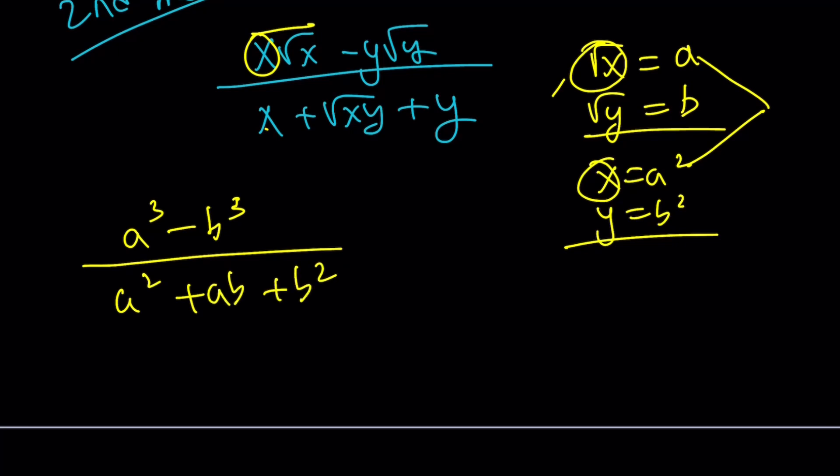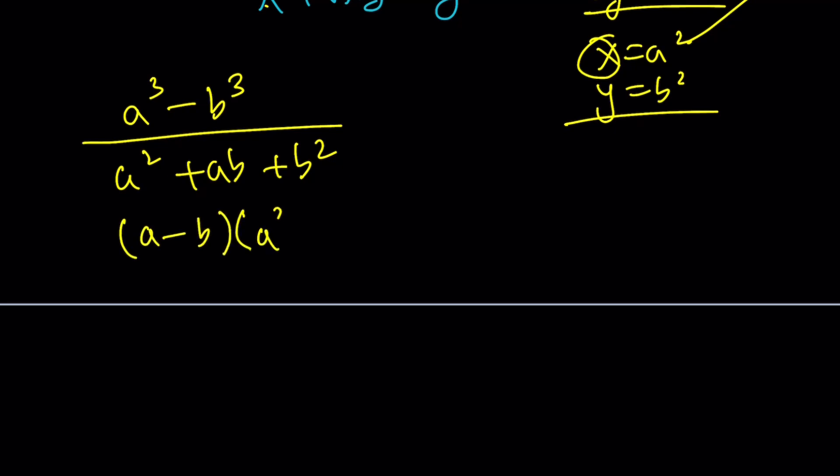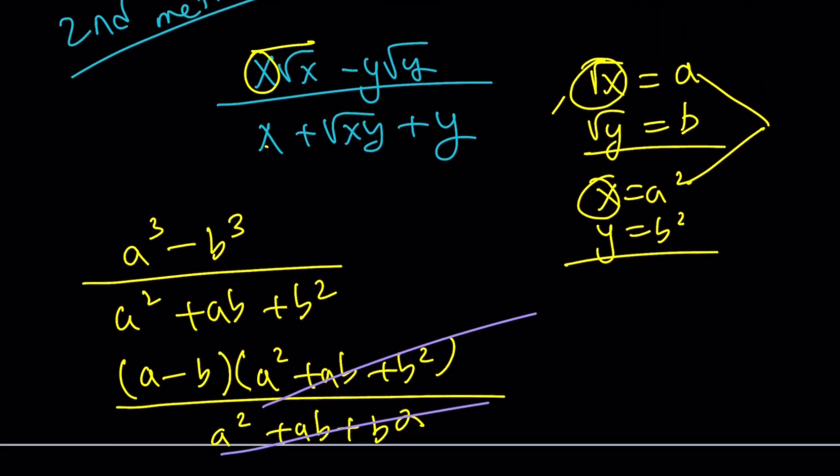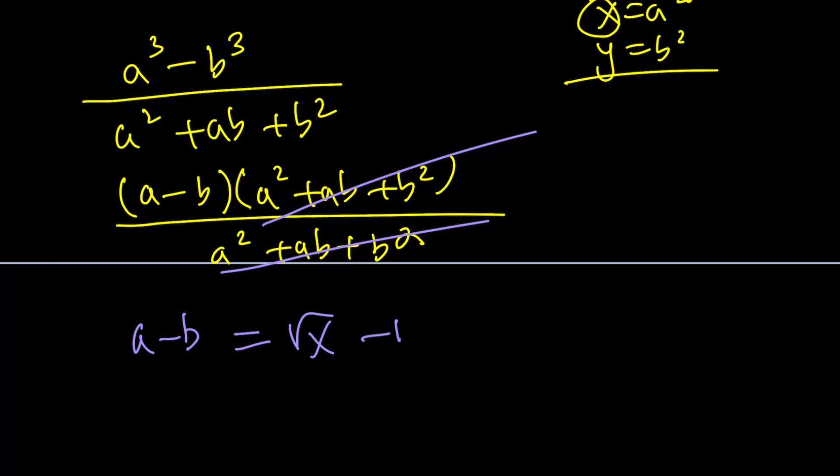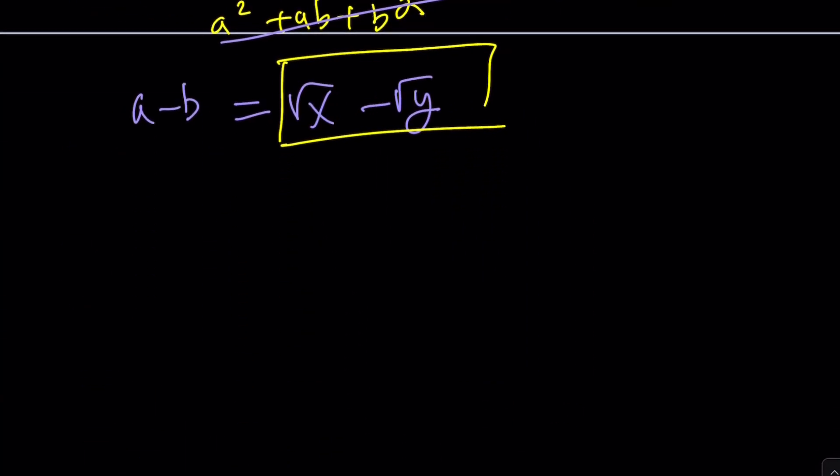What does that remind you? If you said difference of two cubes, you're right. If not, please review these formulas. Difference of two cubes is super important and very common. You can factor it like this, and these two terms cancel out. We end up with a minus b. But what is a minus b? a is square root of x, b is square root of y, so the answer is square root of x minus square root of y as before.